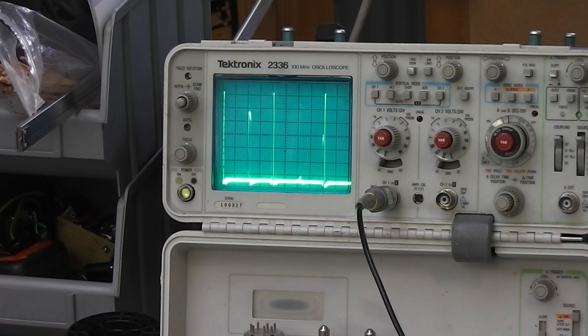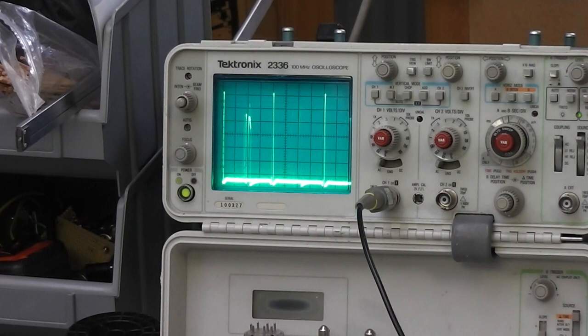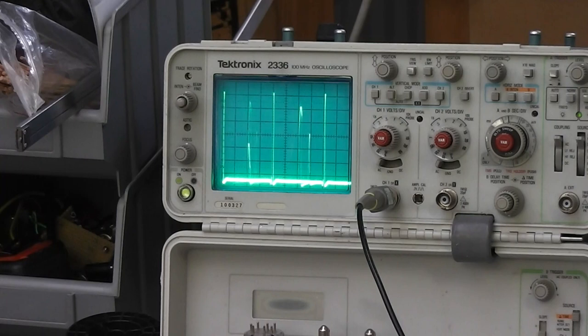Now you see the signal is running into the different direction. I only changed the Egon signal from 502 Hz to 498 Hz. So only 2 Hz difference and running into a different direction.